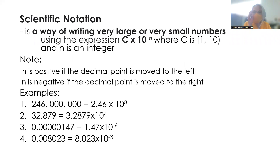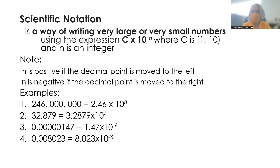Scientific notation is a way of writing very large or very small numbers using the expression c times 10 to the n, where c is greater than or equal to 1 and less than 10. So using interval notation, it's closed interval 1, open interval 10. So hindi pwede yung 10, yung mas mababa sa 10.